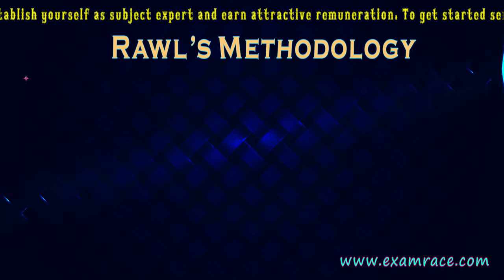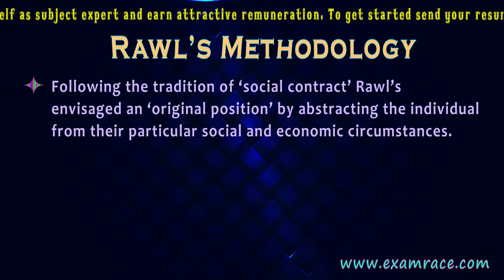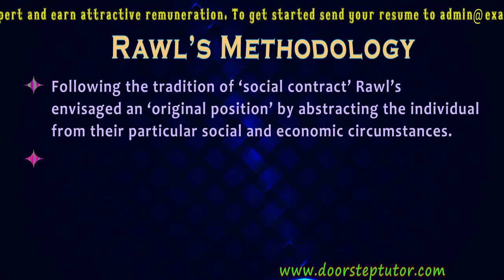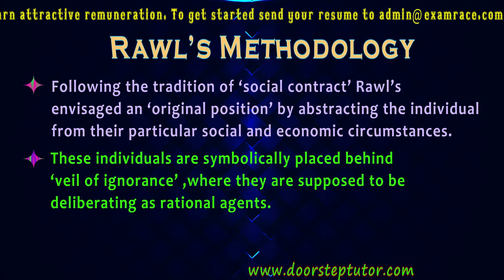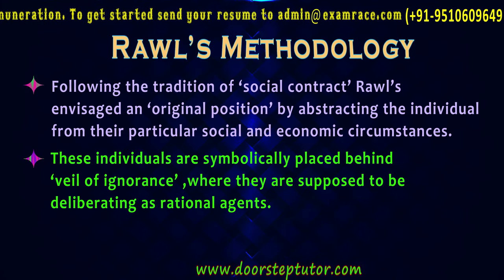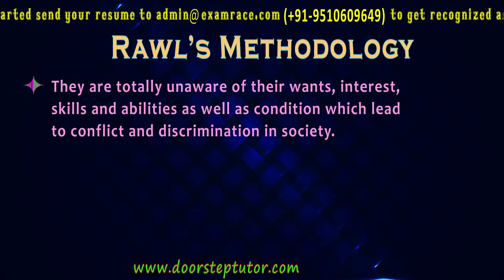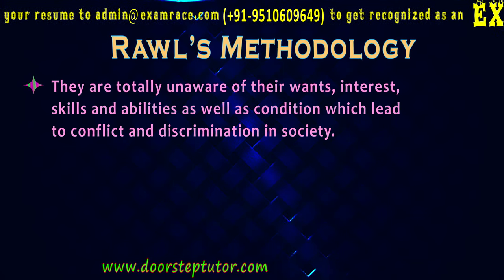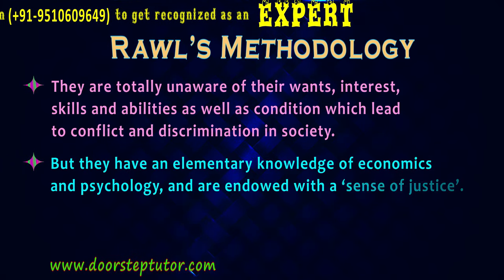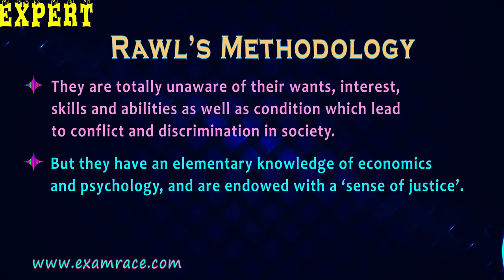Rawls' Methodology: following the tradition of social contract, Rawls emphasized an original position by abstracting the individual from their particular social and economic circumstances. These individuals are symbolically placed behind the veil of ignorance, where they are supposed to be deliberating as rational agents. They are totally unaware of their wants, interests, skills and abilities, as well as conditions which lead to conflict and discrimination in society. But they have an elementary knowledge of economics and psychology, and are endowed with a sense of justice.